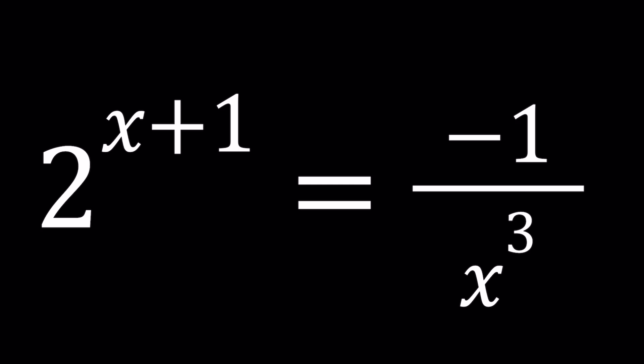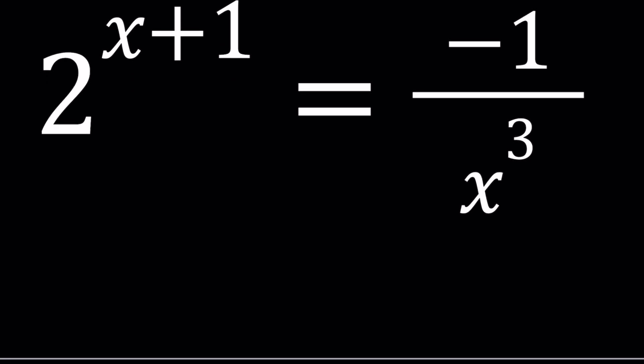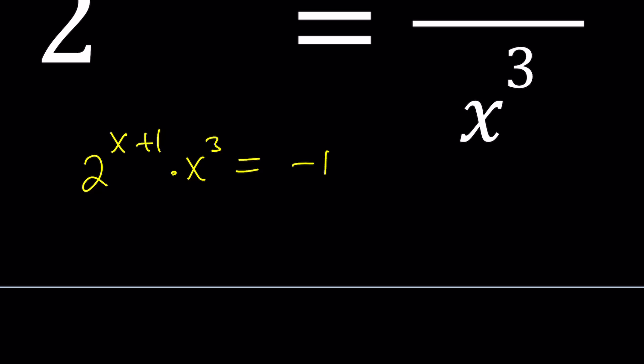Let's break it down. First, I'm going to cross multiply, and then break it down into 2 to the power of x times 2 times x cubed. That product is equal to negative 1.